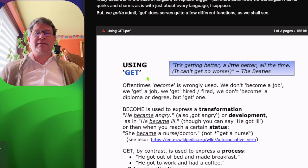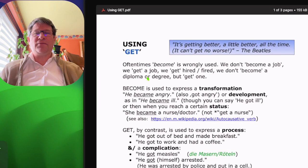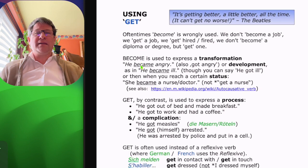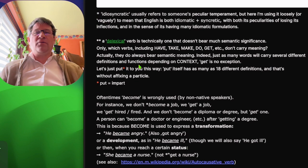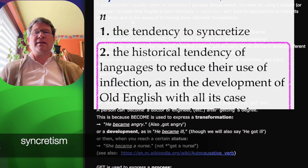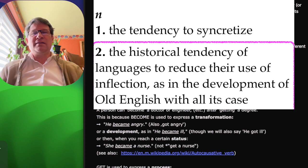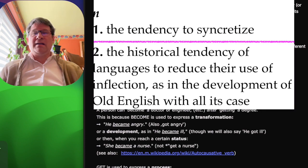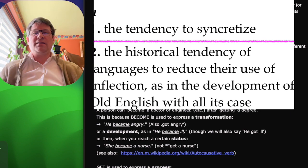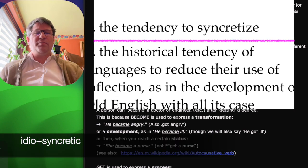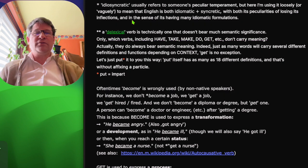My ebook has this in PDF format, and I'll be reading from this. Before we begin, idiosyncratic usually refers to someone's peculiar temperament, but here I'm using it loosely to mean that English is both idiomatic and syncretic, with both its peculiarities of losing its inflections, and in the sense of its having many idiomatic formulations.